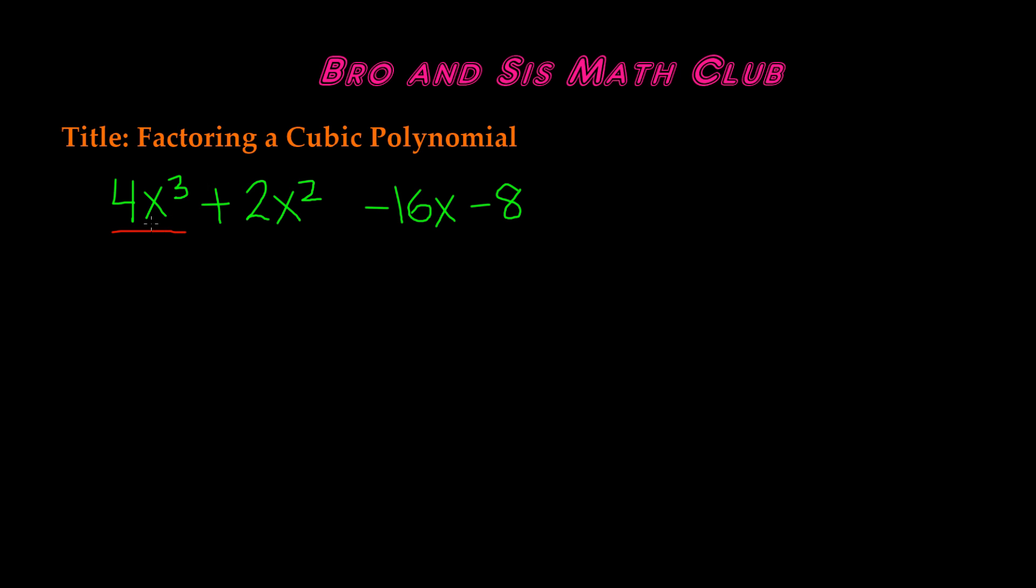So the entire polynomial is 4x³ + 2x² - 16x - 8. This polynomial consists of four terms. The best way to factor this cubic polynomial would be to factor by grouping.